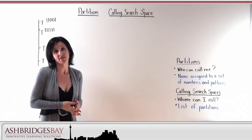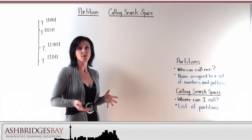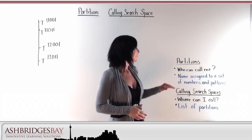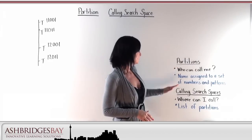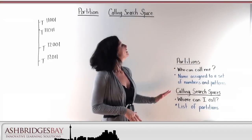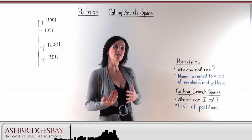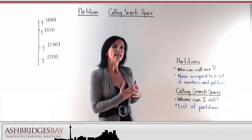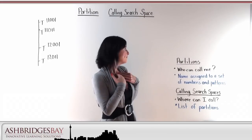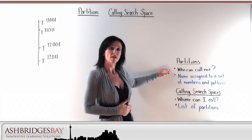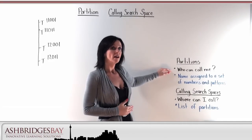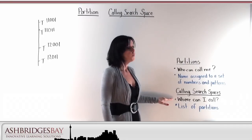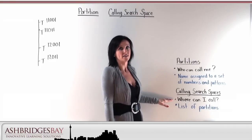The first thing we're going to look at are the two basic concepts we use in class of control: partitions and calling search spaces. If there's a partition on a line, it says who can call that line. If this were my phone, a partition says who can call me. A calling search space on a line controls where can I call.